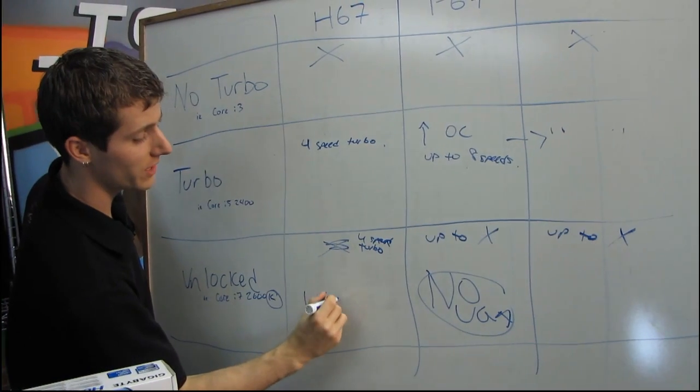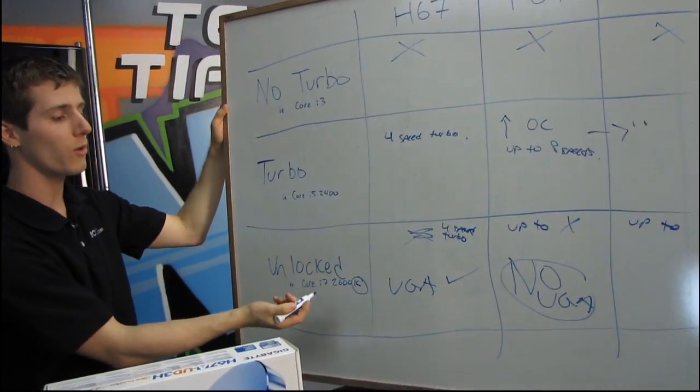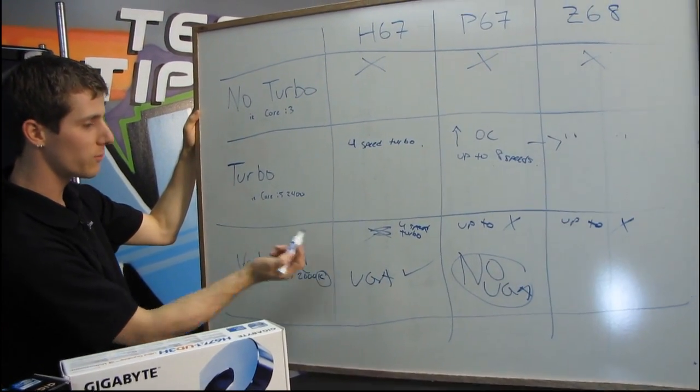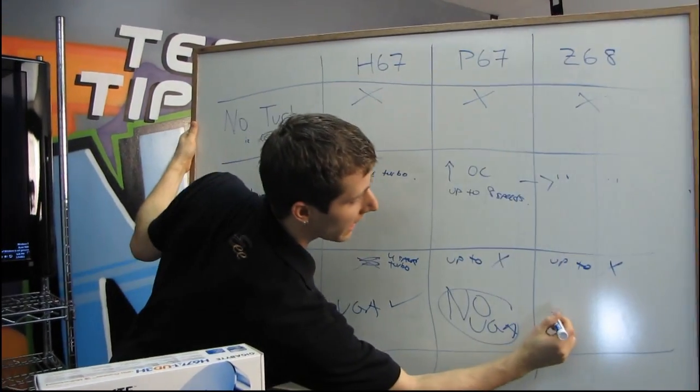On H67, we have onboard video enabled, but we actually can't overclock the chips. So you have the best possible graphics core only supported on the chipset where you can't overclock it. On Z68, we have onboard graphics enabled—that is the difference between Z68 and P67. It has sort of the best of both worlds.